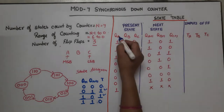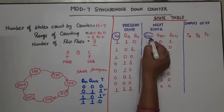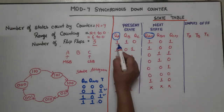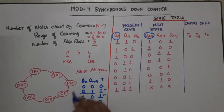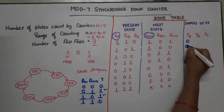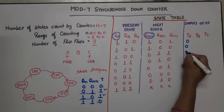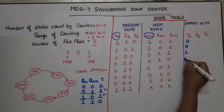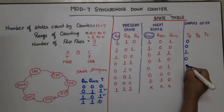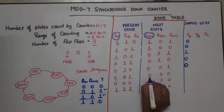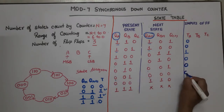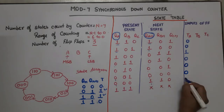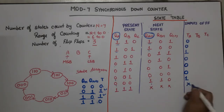Now we apply this to fill in TA. Comparing QA and QA+1 for each row: 1→1 no change gives 0; 1→1 no change gives 0; 1→0 change gives 1; 0→0 no change gives 0; 0→0 no change gives 0; 0→0 no change gives 0; 0→1 toggle gives 1. The don't care row gets 'X' for all three inputs.